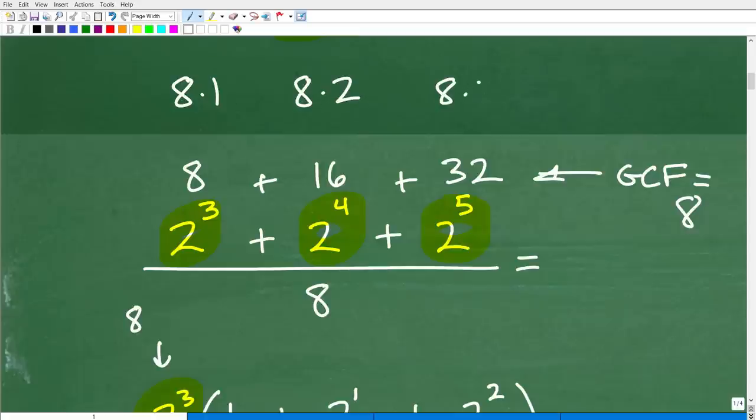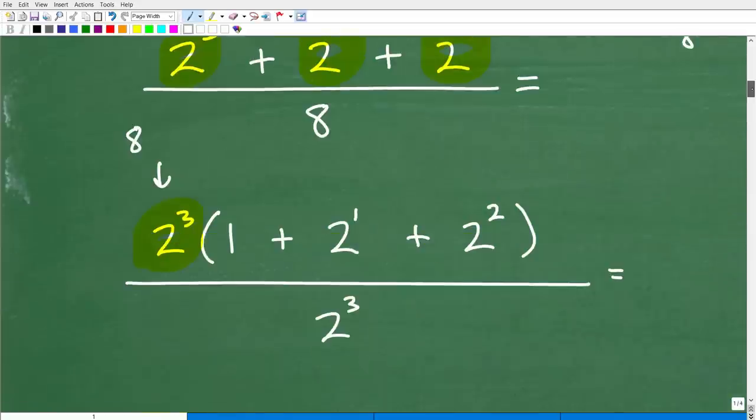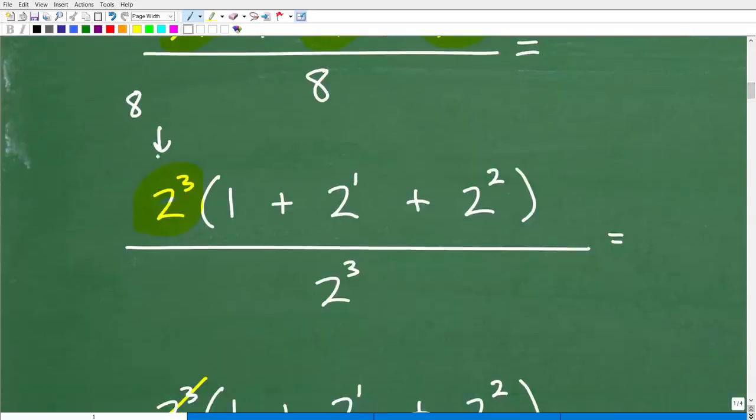So all of these numbers have this factor in common, 8. Okay, they also have a 2 in common and a 4 in common, but the greatest common factor, the greatest factor they have in common is 8. So when you see a situation like that, always factor out that GCF. That really makes things a lot easier. But we're going to kind of do this with powers. So we're going to factor out that 8 or 2³.